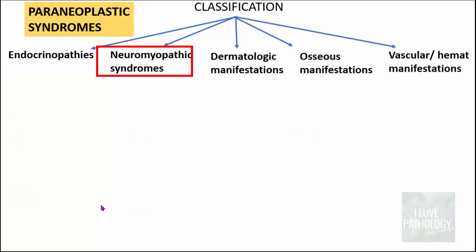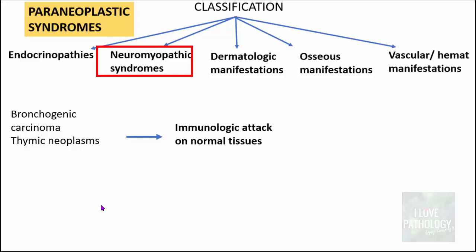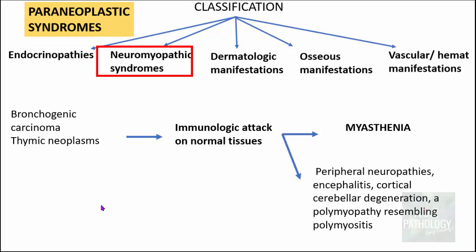For neuromyopathic manifestations, tumors such as thymomas and thymic neoplasms cause immunologic attack on normal tissues, resulting in a myasthenia-like syndrome or even myasthenia gravis-like disease. This can also result in peripheral neuropathies, encephalitis, cortical cerebellar degeneration, and a polymyopathy resembling polymyositis.